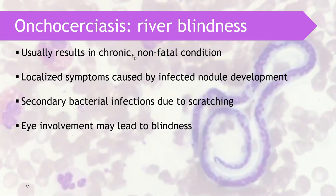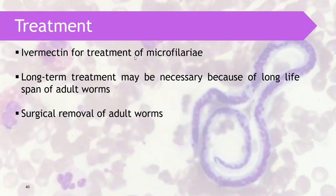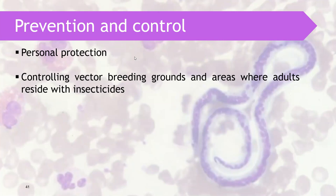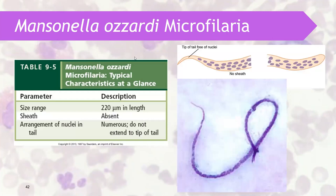Onchocerciasis or river blindness is usually a chronic and potentially fatal condition with localized symptoms affecting the eye and nodule involvement. It is also prone to secondary bacterial infections due to scratching. Eye involvement can lead to blindness. Ivermectin is the treatment of choice for the microfilariae and long-term treatment may be necessary because of the lifelong span of the adult worm. Prevention and control involves personal protection and controlling vector breeding grounds.